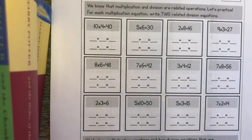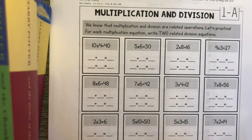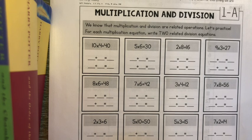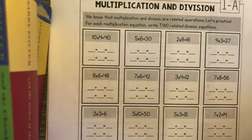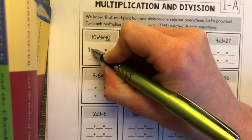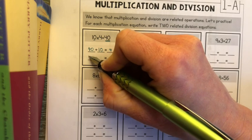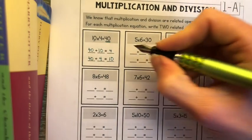Now for the multiplication and division section from the two-digit multiplication station. We know multiplication and division are related operations — they're each the opposite of each other. For each multiplication equation, write two related division equations. If you've been practicing your facts all week this will be easy. So: 10 times 4 is 40 — to set up your division sentences, start with the biggest number: 40 divided by 10 is 4, and 40 divided by 4 is 10.